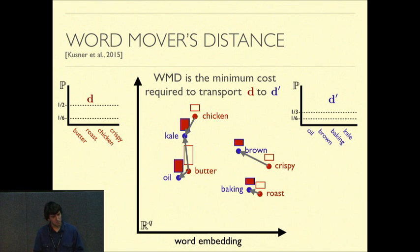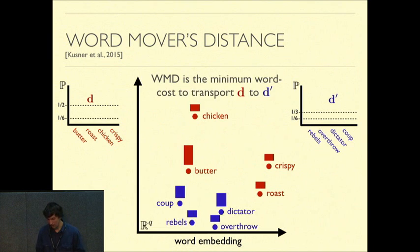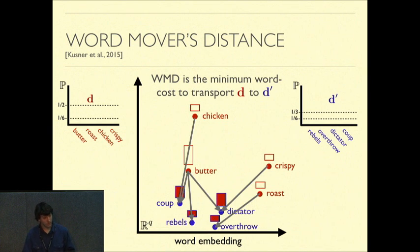The reason minimum cost makes sense is because for documents like these that are very similar, this transport, which is shown in these gray arrows, is very small, which intuitively makes sense because the word embeddings are close. For two very different documents, when I replaced the second document about rebels overthrowing a dictator, the transport between these two documents ends up being much larger because we have to traverse much farther in word space.